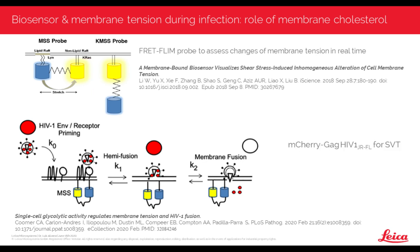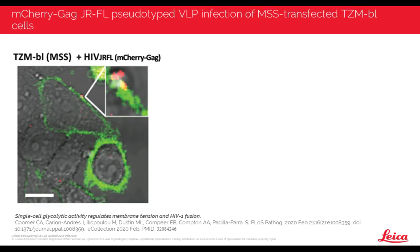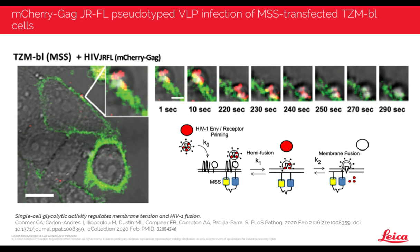So it's a matter of multiplexing. We have an mCherry-HIV variant that can come to the membrane, interact with the receptor and co-receptor, and on the other side of the membrane we have this MSS probe. This allows us to tell what the membrane tension is at the spot where the virus fuses. With these viral particles, we can identify the timing of hemifusion pore and full fusion pore opening and correlate that with whatever changes in membrane tension we observe. Specifically, we have mCherry-GAG-HIV-JRFL for single-virus tracking, and in the host we have the MSS probe transfected into TZMBL cells, which contain all the HIV receptor and co-receptor machinery.